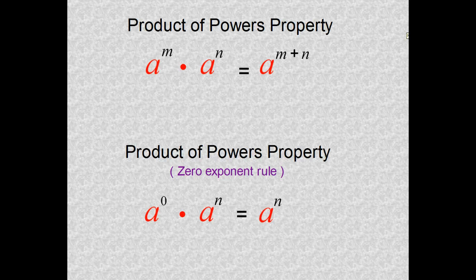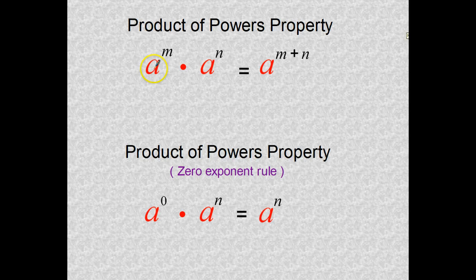In the last video, we talked about the product of powers property and that property basically states that if we have two values that have exponents, we'll call it a to the m multiplied times a to the n. As long as these bases are the same and we're multiplying, the quick rule is to take your exponents m and n and you are to add them, put them together.